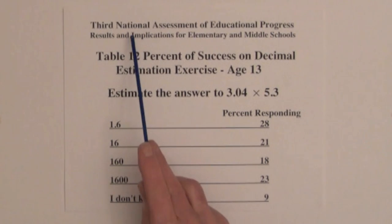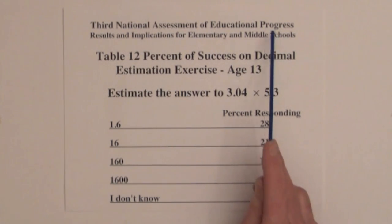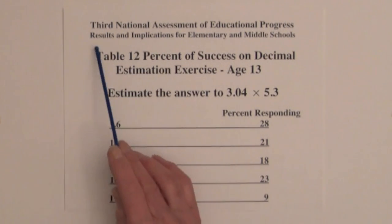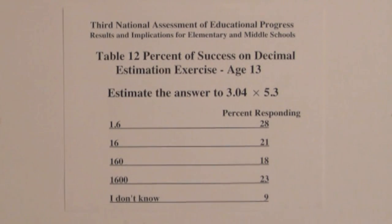This result from the National Assessment of Educational Progress shows that students age 13 have difficulty rounding and estimating products of mixed numbers. To the nearest whole number, 3 and 4 tenths rounds to 3, and 5 and 3 tenths rounds to 5. The product of these two numbers is 15, and the closest of the given numbers to 15 is 16. It was selected by only 21% of the students. One implication from these results is that students need more experiences in rounding and estimating.